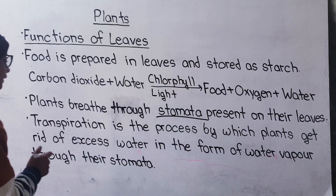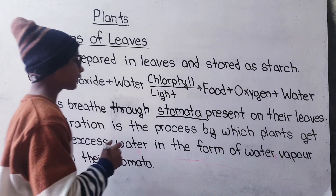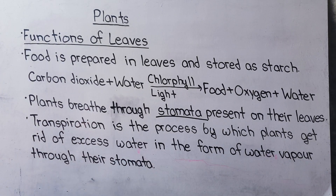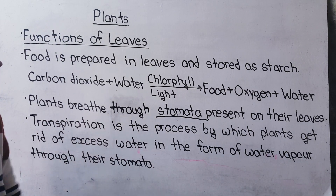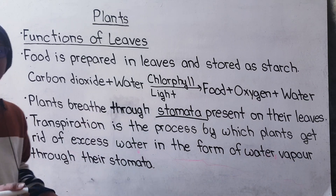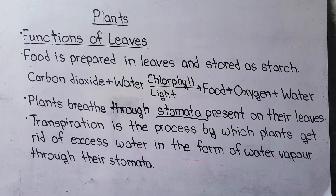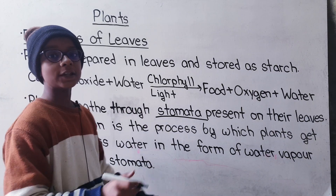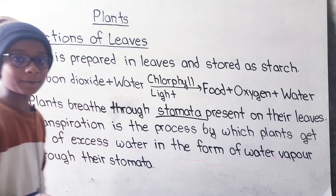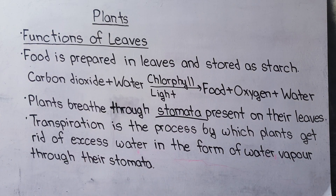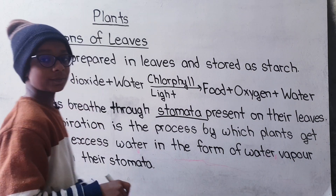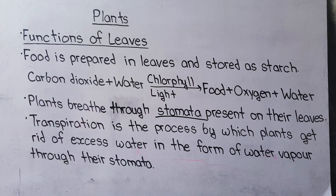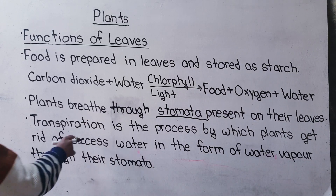Transpiration is the process by which plants get rid of excess water in the form of water vapor through their stomata. These stomata are the tiny holes through which plants breathe. We call this process transpiration.